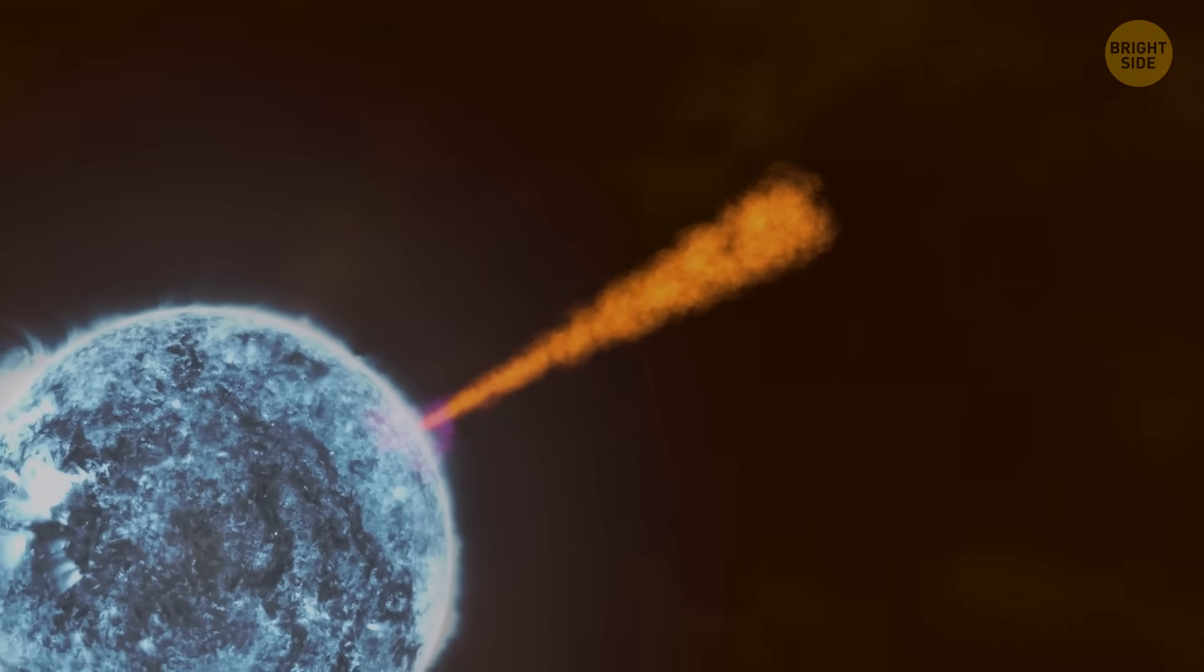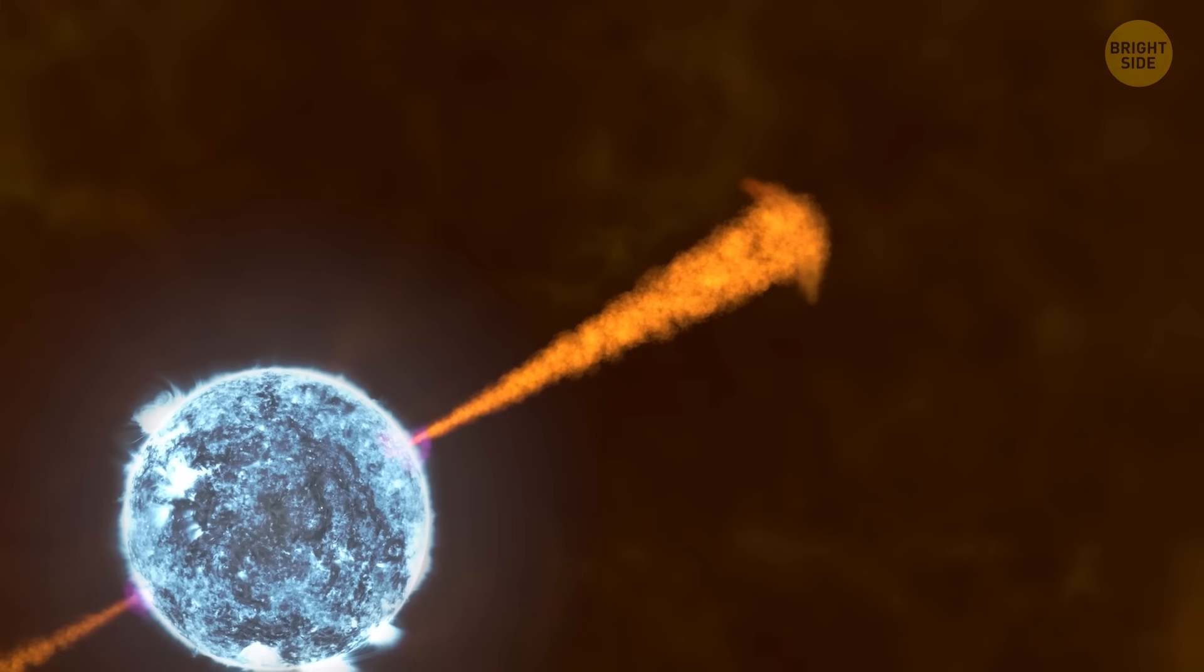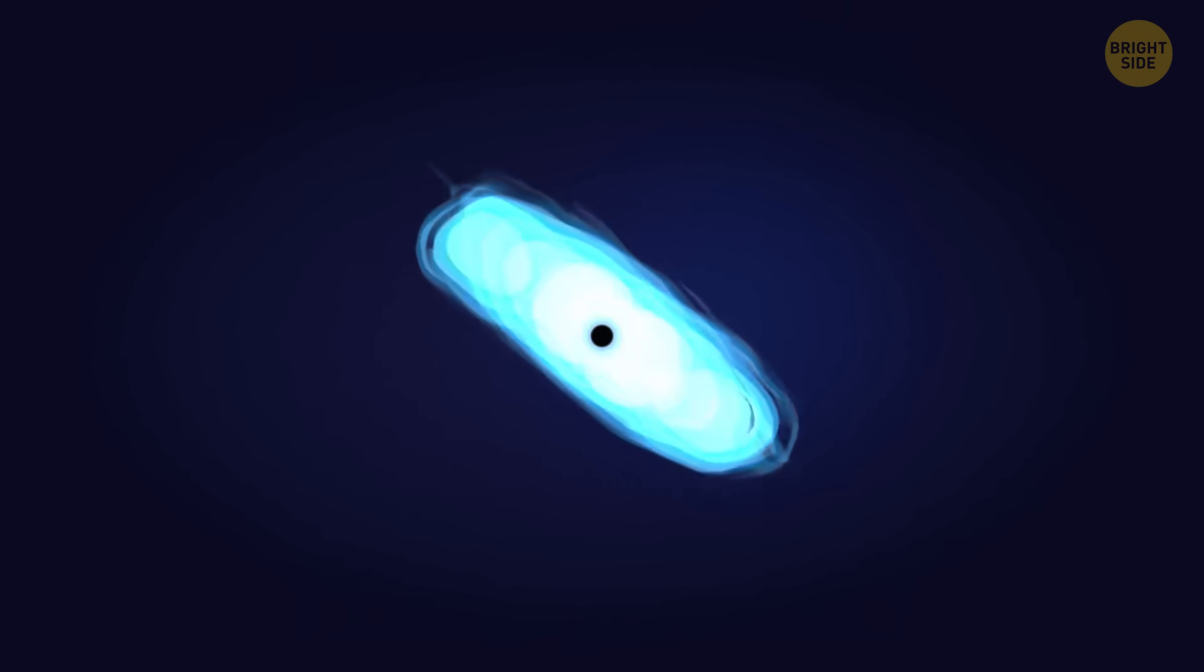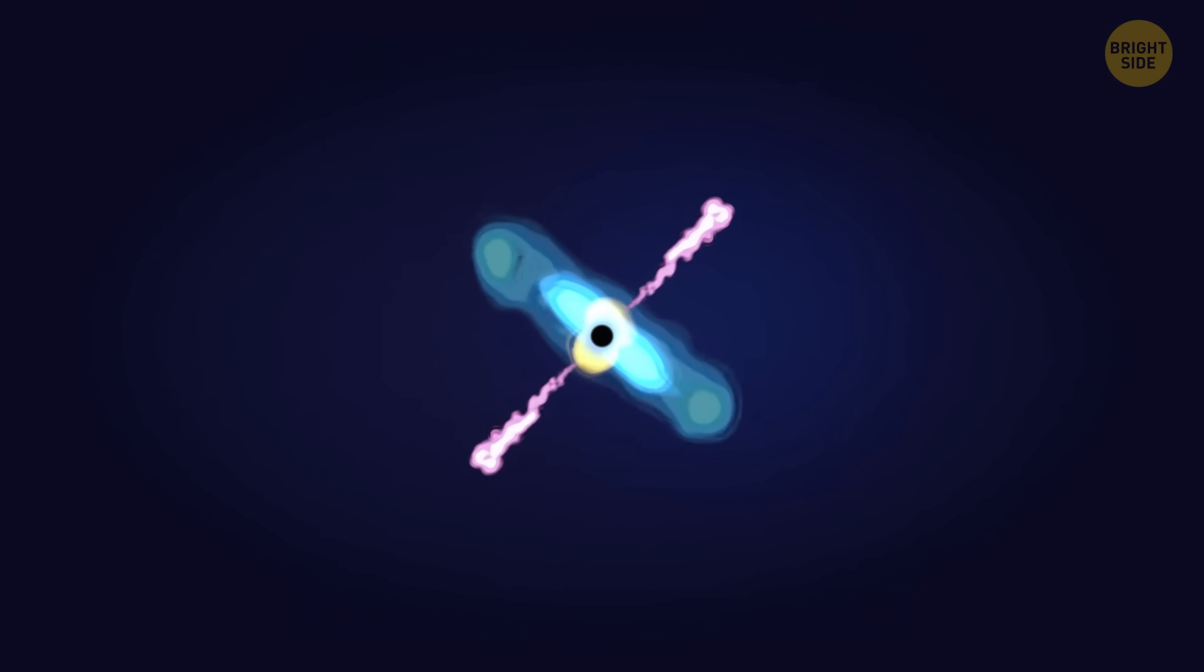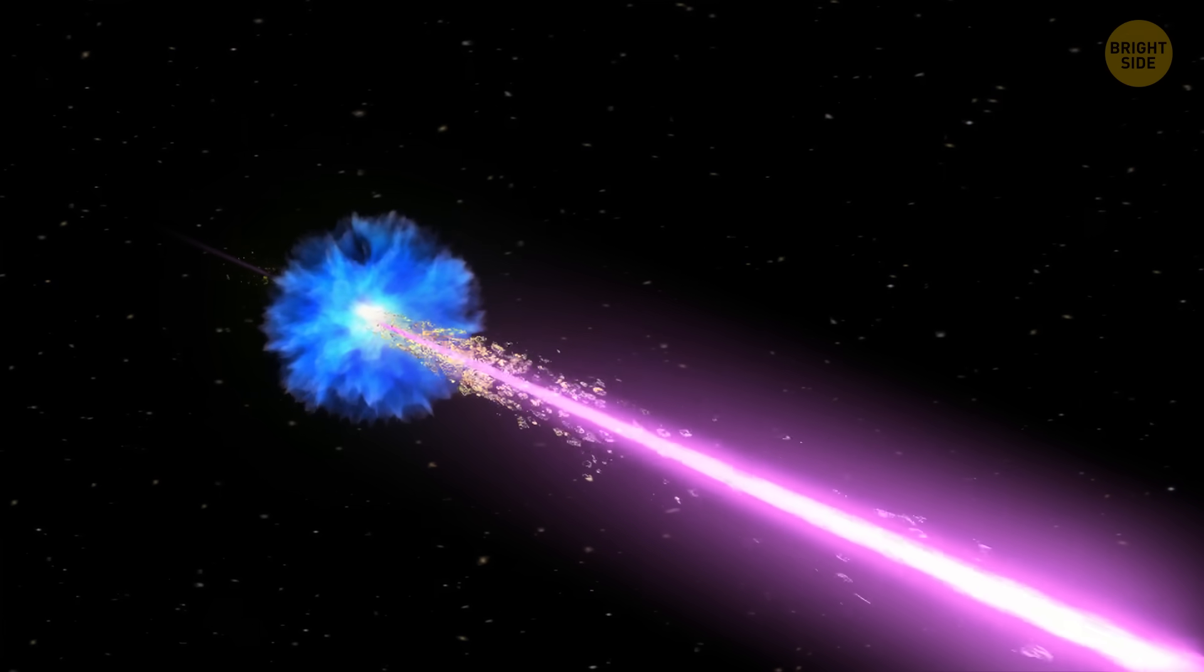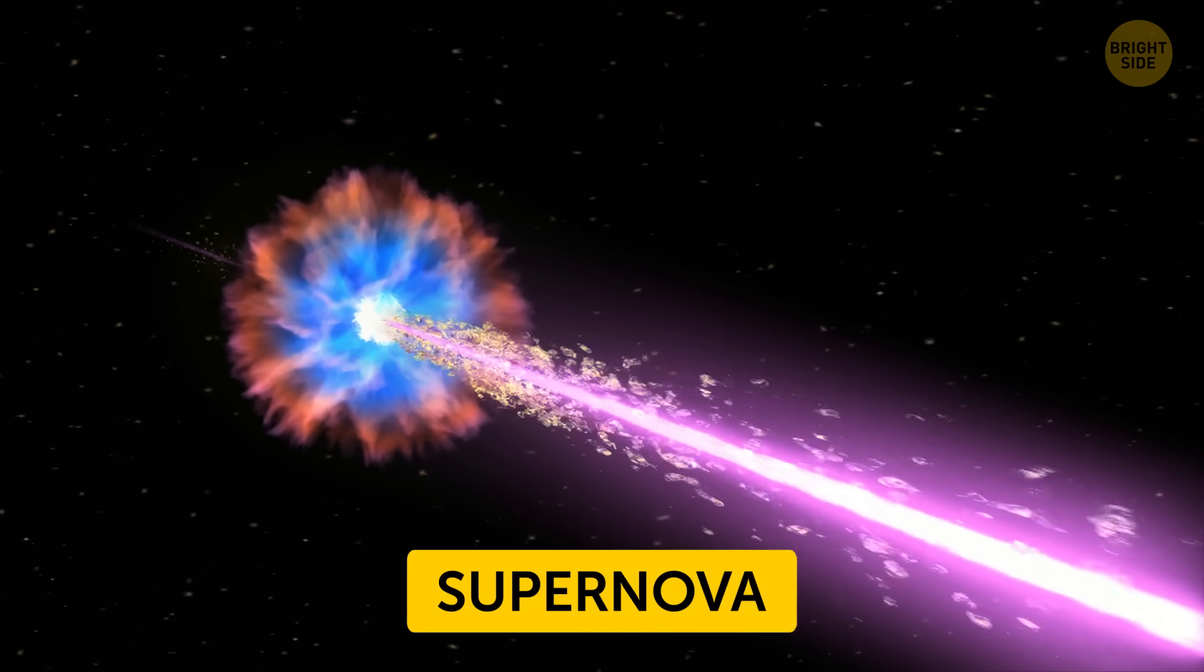Gamma-ray bursts are the most powerful explosions in the universe, and they can happen in unusual ways. Long-duration gamma-ray bursts are caused by the demise of massive stars that spin incredibly quickly. When these stars run out of fuel, their cores collapse under gravity, forming an extremely dense object like a black hole. At the same time, the outer layers of the star are blown away in a massive explosion called a supernova.